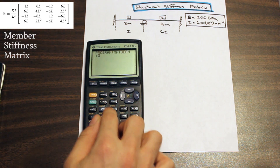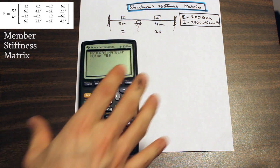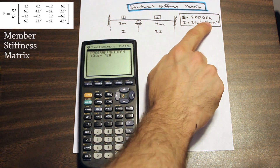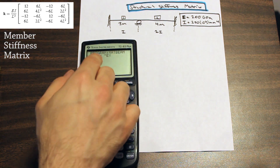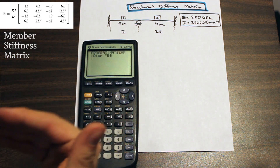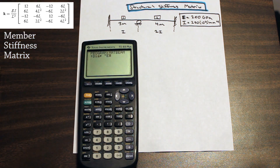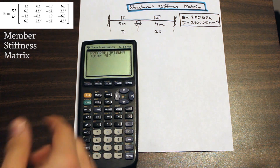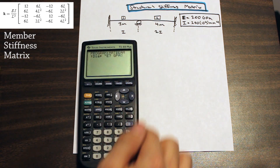We're going to start by going to program, display, and ask for E. I like to have the program prompt me on which units to put in. Usually, the problem gives you modulus of elasticity in GPa, moment of inertia in millimeters to the fourth, and length in meters. So we'll have the program ask for E in gigapascals and store that in variable E.